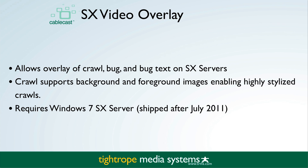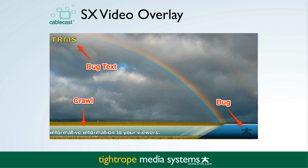The app does require Windows 7, which is all machines shipped after July 2011. The SX Video Overlay app allows for overlaying bug text, a bug, and a crawl on your SX video server's output. This image highlights what those three elements are.